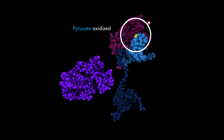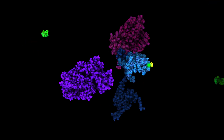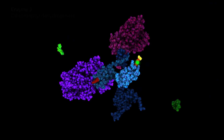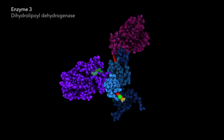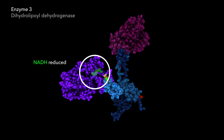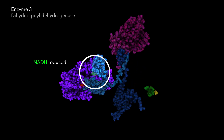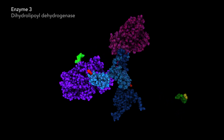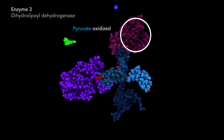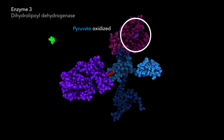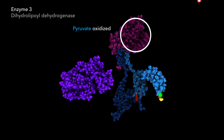Two electrons from pyruvate oxidation are retained by the second enzyme before passing them to coenzyme NADH, catalyzed by the third enzyme. Coenzyme NADH travels through the matrix, delivering electrons for the electron transport chain.